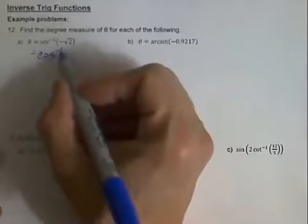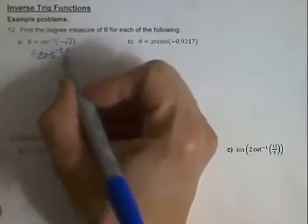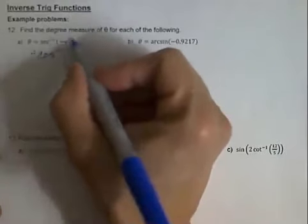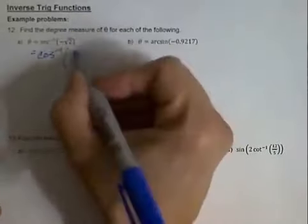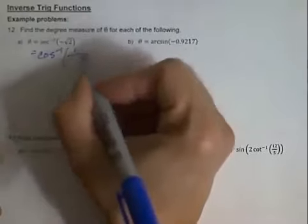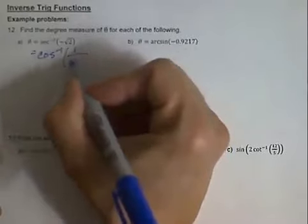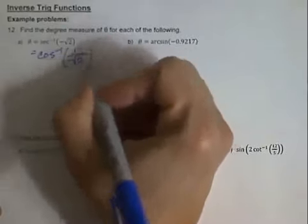If we're going to change this to inverse cosine, when we do that, we also have to take the inside and flip it over. We would make this 1 over the negative square root of 2.